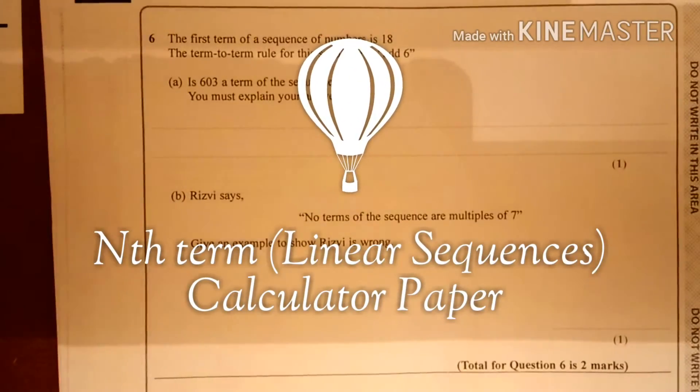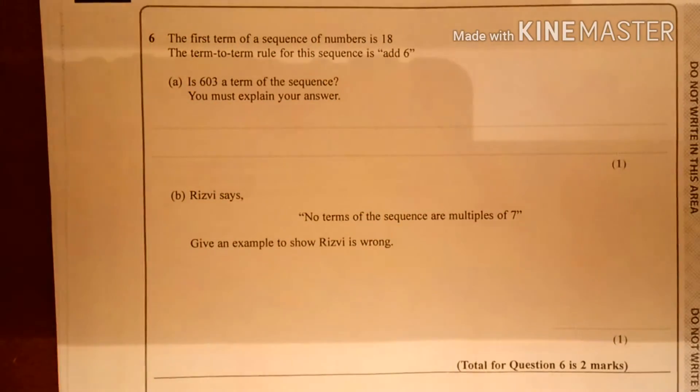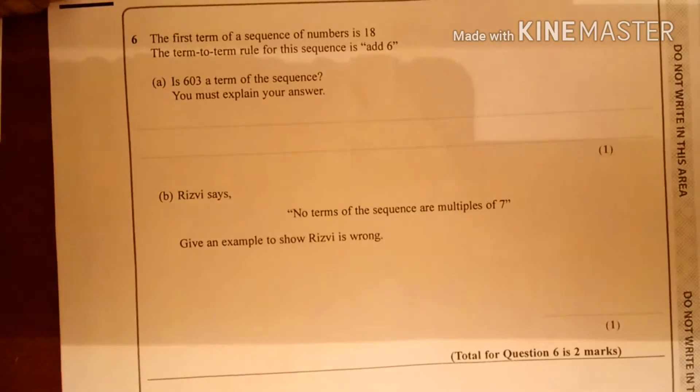The first term of a sequence of numbers is 18. The term-to-term rule for this sequence is add 6. Is 603 a term of this sequence? You must explain your answer.